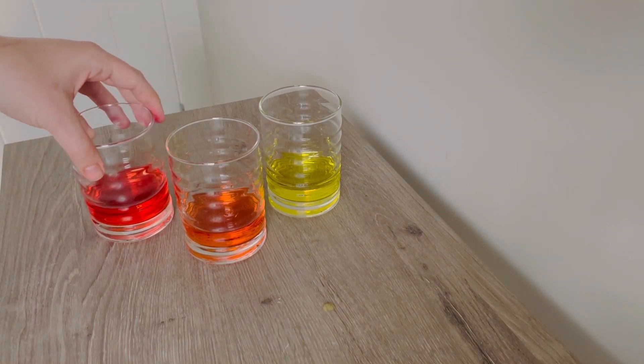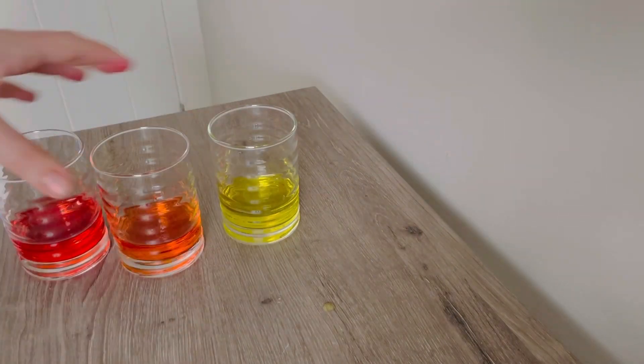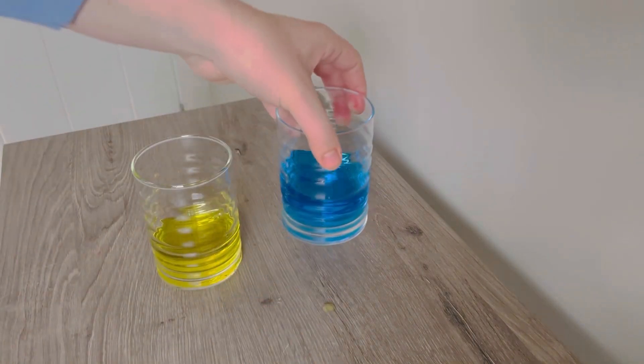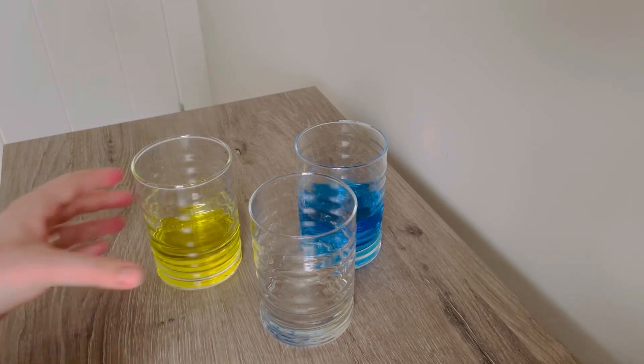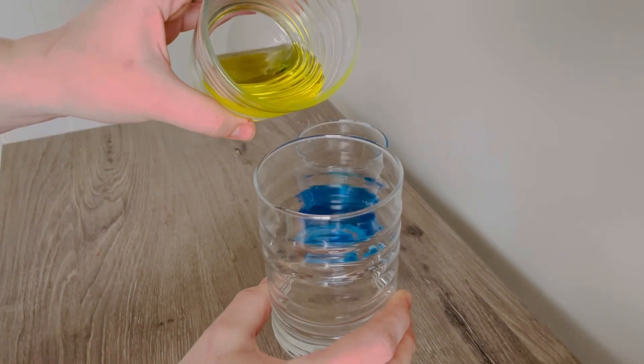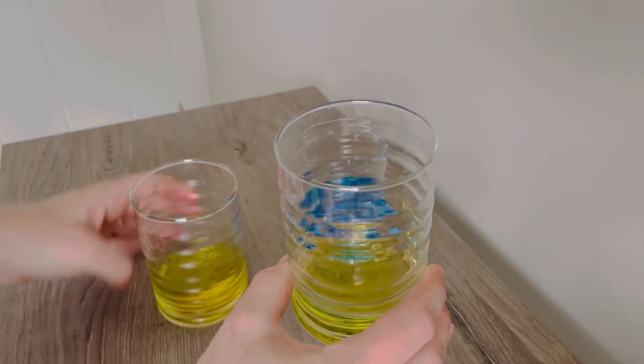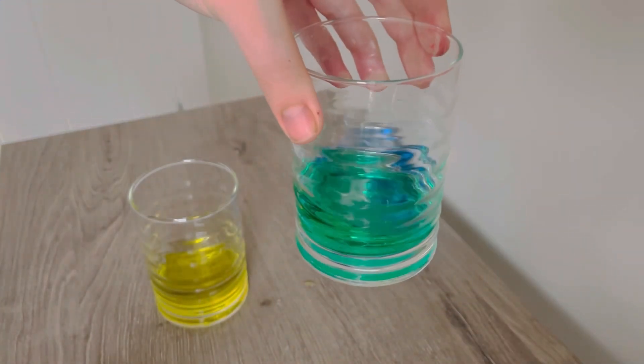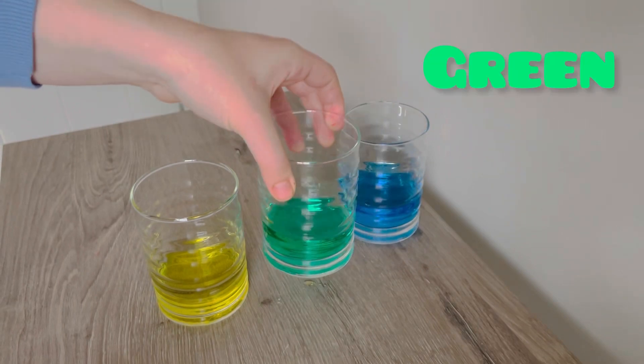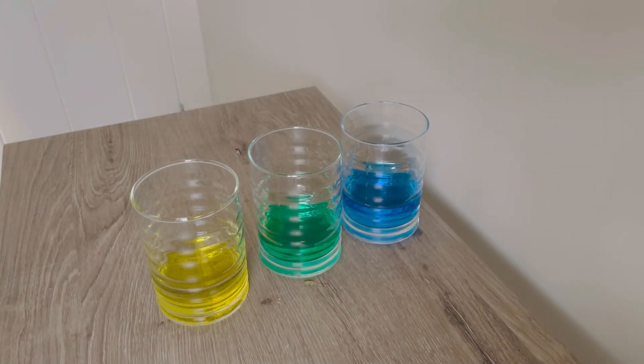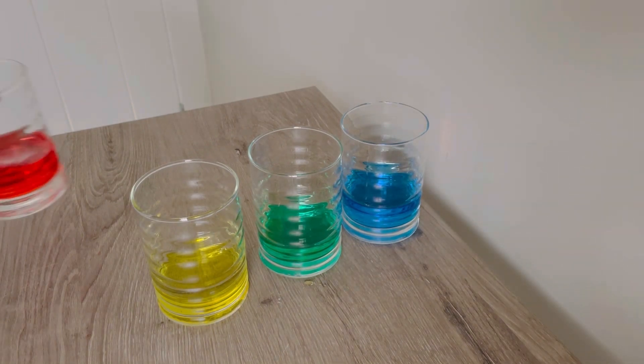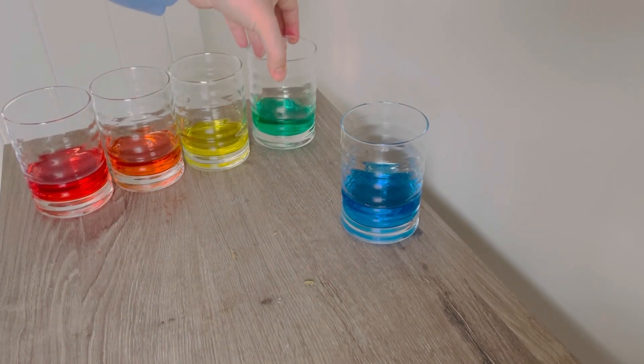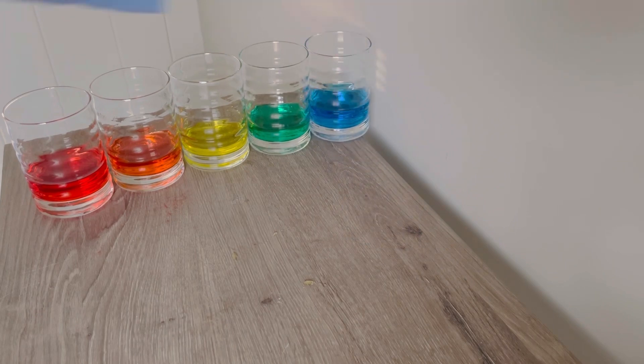Let's keep going. So next, I'm going to take our yellow and our blue, and a new cup. Okay, ready? Yellow, blue. Mix, mix, mix. What's that? It's green. Last one. Okay, we have our red, orange, yellow, green, and blue. What are we missing?